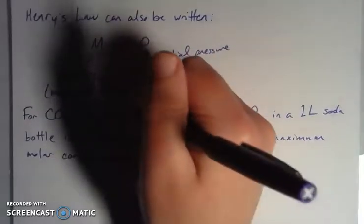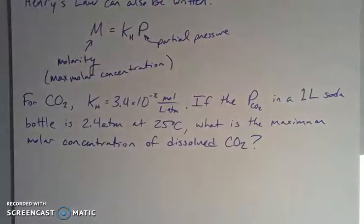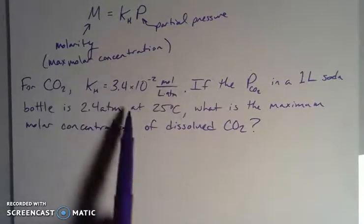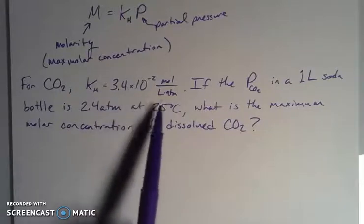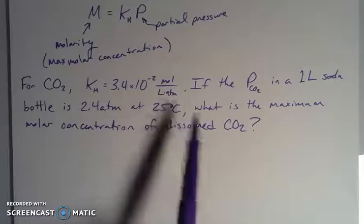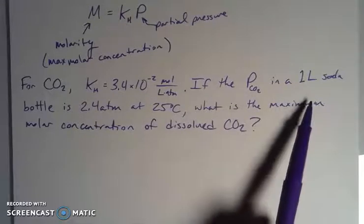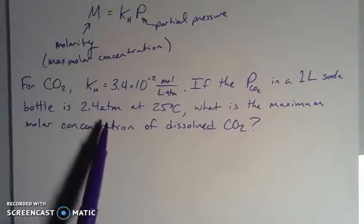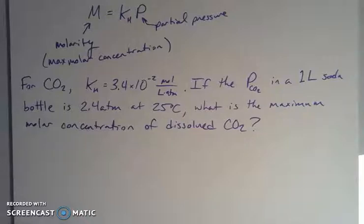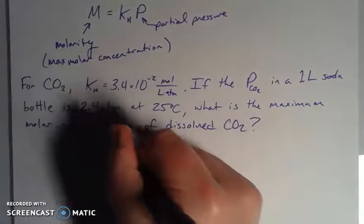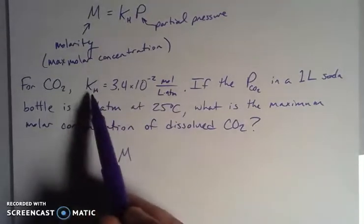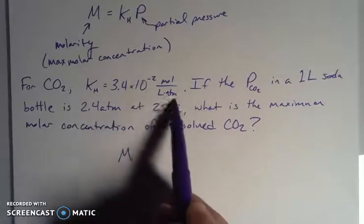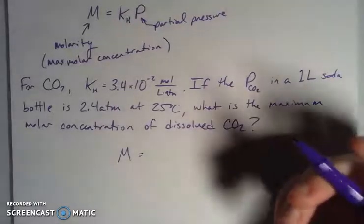So let's take carbon dioxide like in my carbonated sodas or my sparkling water. I'm given Henry's Law constant that looks like this. So note my units here are moles per liter atmosphere. If I have this partial pressure in one liter of 2.4 atmospheres at 25 degrees Celsius, what's the maximum molar concentration that I get for this? So I'm solving for M. I'm given my Henry's Law constant. I'm given a partial pressure here. And because my units align, I have atmospheres in both, then it's just a plug and chug operation.